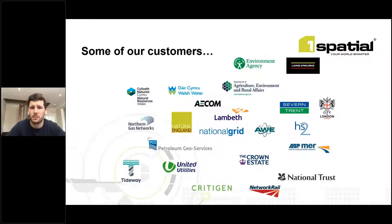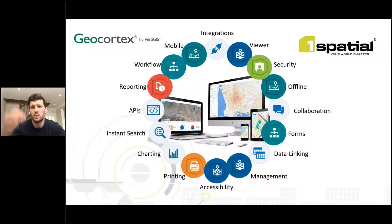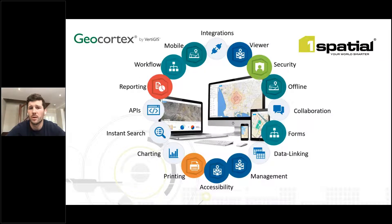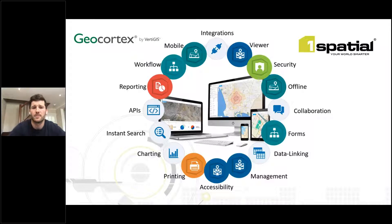Looking specifically at our Geocortex software solution, we've worked with Vertigis, formerly Latitude Geographic, since 2011 when we started selling Geocortex in the UK. Geocortex offers a suite of products which include mobile and web viewers such as Geocortex Mobile and the HTML5 Viewer, as well as capabilities including workflow, reporting, and printing. Using the SaaS versions of Geocortex's software ensures your software is always up to date, allowing Vertigis to regularly deliver bug fixes and upgrades.